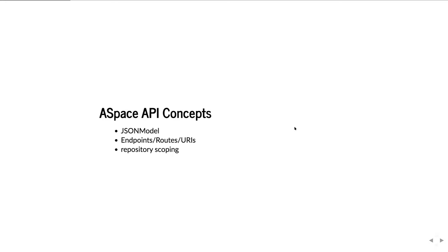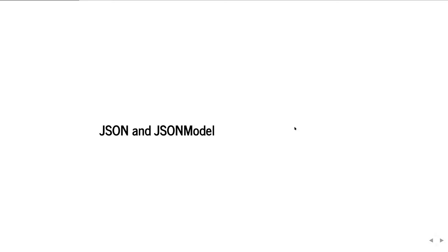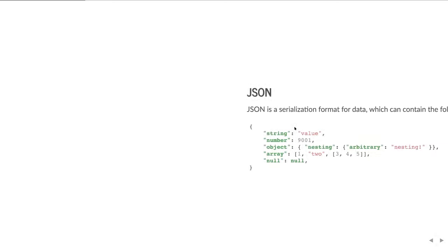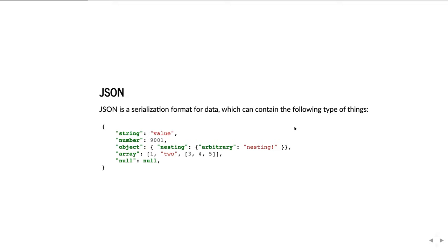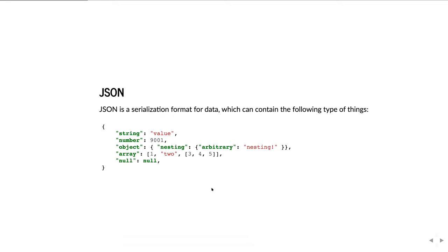Now let's talk about some general concepts around the ArchivesSpace API. These are general categories of things you'll encounter. The first thing we're going to talk about is JSON and JSON Model. JSON is a serialization format for data, which can contain the following types of things.